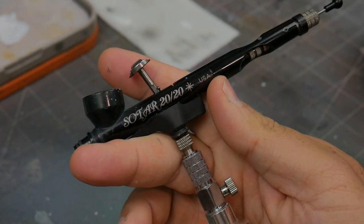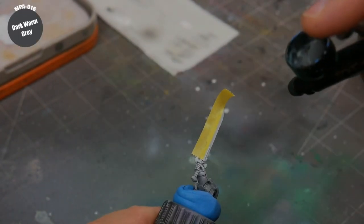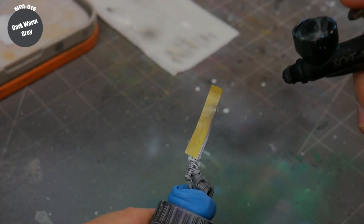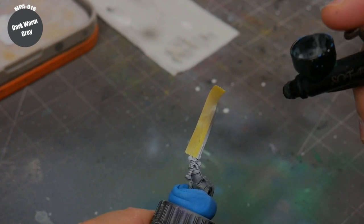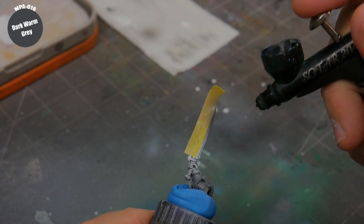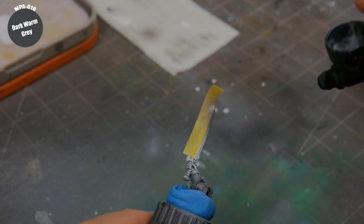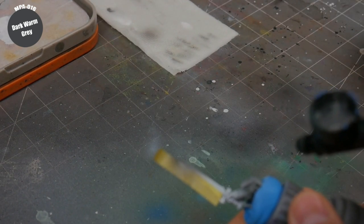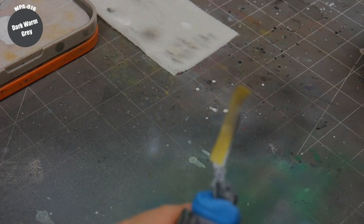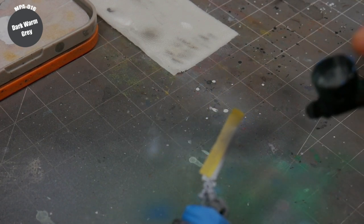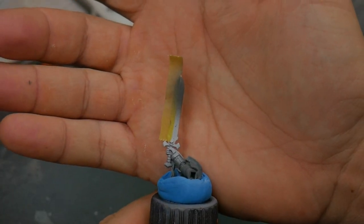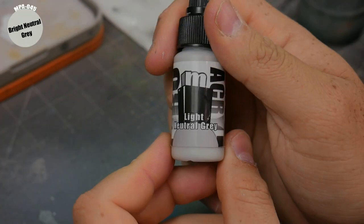I'm going to use my Badger Sotar 2020. It's a little more of a fine detail brush with a 0.2 needle. I like that for these tight little transitions like this. I'm going to thin my paint down to about, I want to say somewhere in the realm of 6 to 8 to 1. 6 to 1 to 8 to 1 and I'm going to feather it out. The dark is going to be towards the point of the sword. So I'm going to aim towards the point of the sword and the bottom of the cone of the spray out of the brush is going to be hitting perfectly at the tip of the sword. So now we've got this nice little natural transition towards the center.